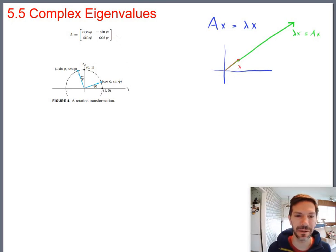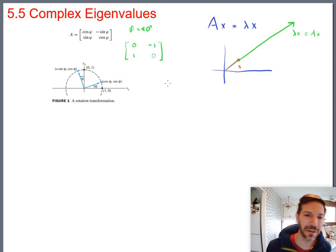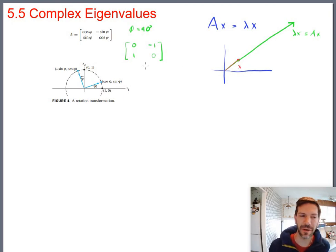So maybe let's take a look at a particular example. Let's just say 90 degrees. So if we're rotating 90 degrees, again, obviously that doesn't lengthen or shorten vectors. It just spins them around. So if your rotation is 90 degrees, then cosine of 90 degrees is 0, sine of 90 degrees is 1.